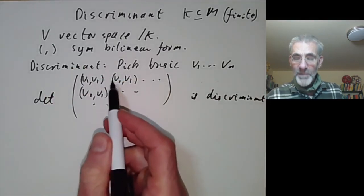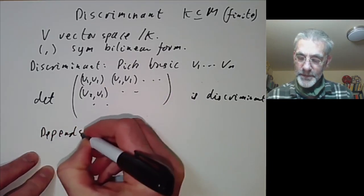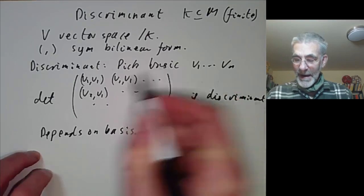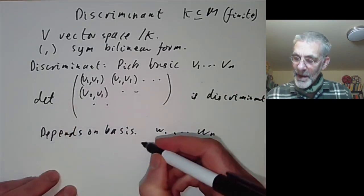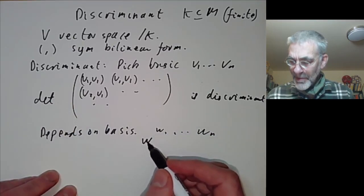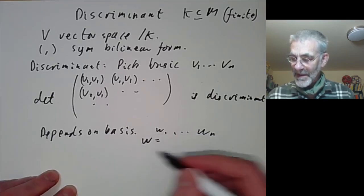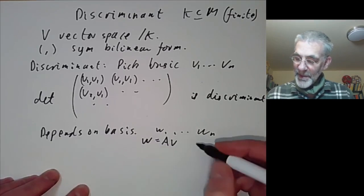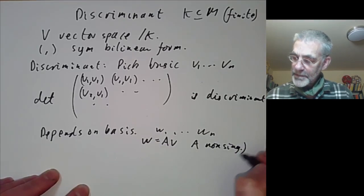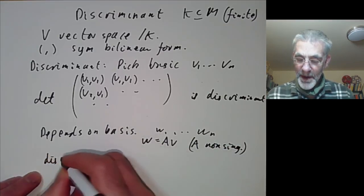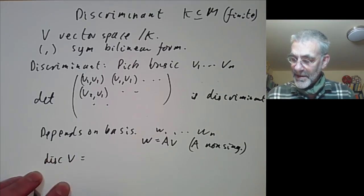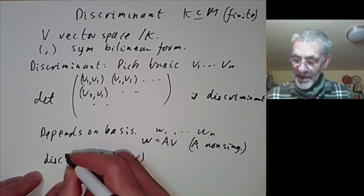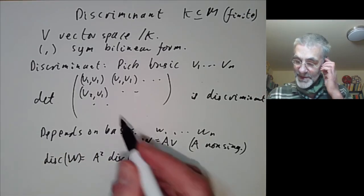There's a bit of a problem because it depends on the choice of basis. Suppose you choose a new basis w1 up to wn — how does the discriminant change? The new basis w is given by A times v for some non-singular matrix A. You find the discriminant with respect to w is equal to det(A)² times the discriminant with respect to the basis v. That's a rather easy calculation.